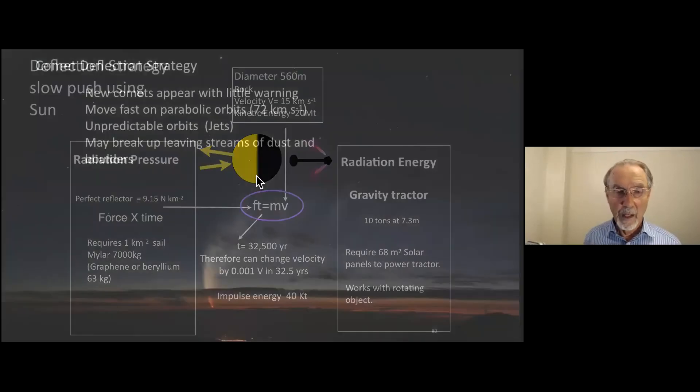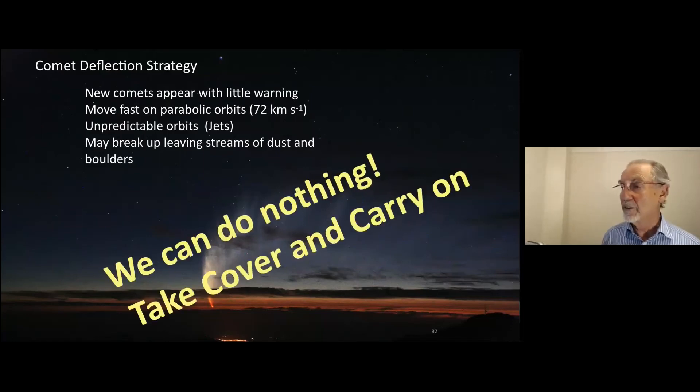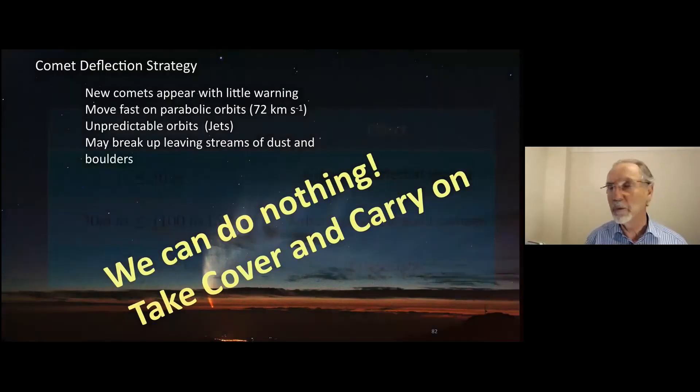Now, what about comets? Comets appear with little warning, move fast on parabolic orbits. They're unpredictable. Their orbits because of their jets. They may break up, leaving streams of dust and boulders and so on and so forth. So what do we do about comets? Well, frankly, we can't do anything, just take cover and carry on. And of course, we don't know when the next comet's coming, but there aren't so many comets around. So perhaps we don't have to worry too much. Just to now wrap it up very quickly.